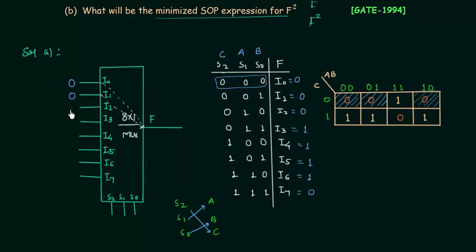Now I will write down these values in the 8:1 MUX: 0, 0, 0, 1, 1, 1, 1, 0. S2 equals C, S1 equals A, and S0 equals B. This is how we implement function F using 8:1 MUX. We used the truth table for 8:1 MUX and the K-map given in the problem.